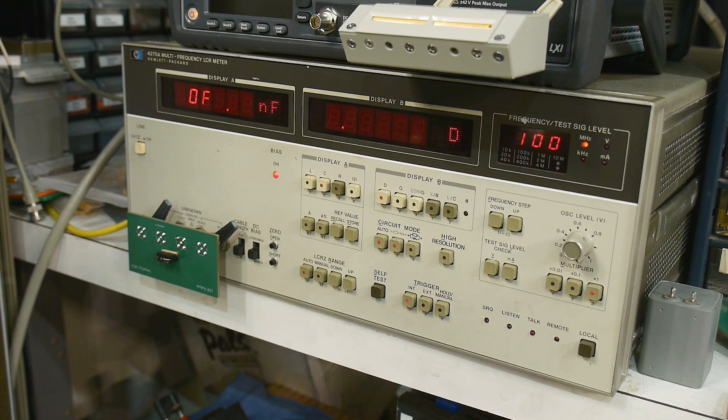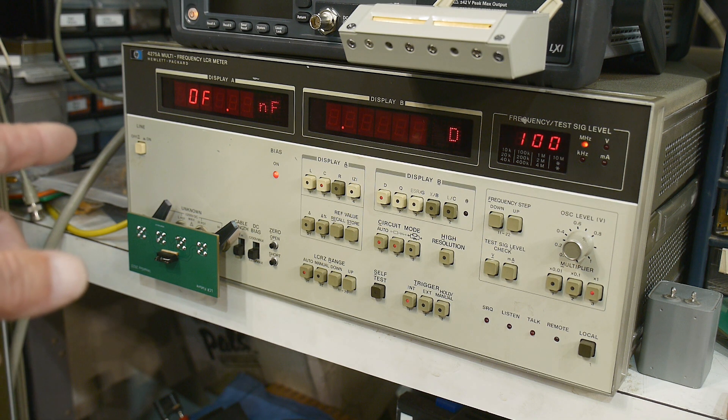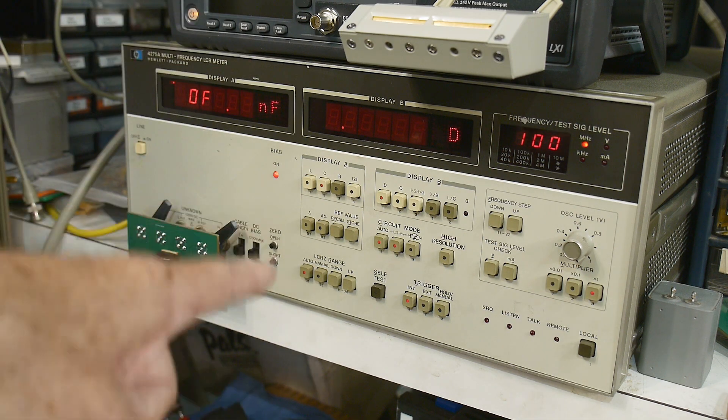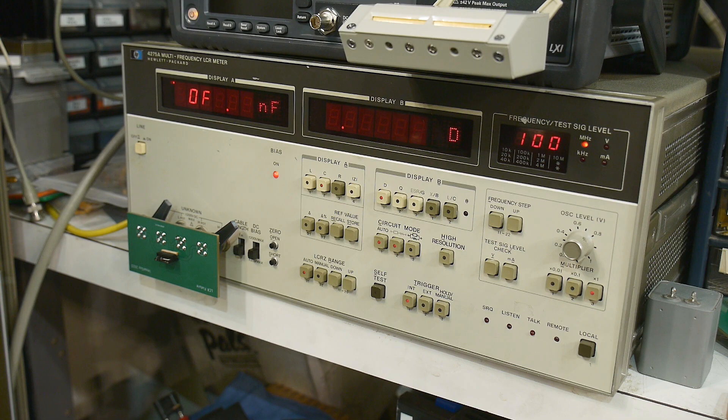But also, reading the manual, you can actually enable the DC bias over HPIB control. So that's what we are going to do today.